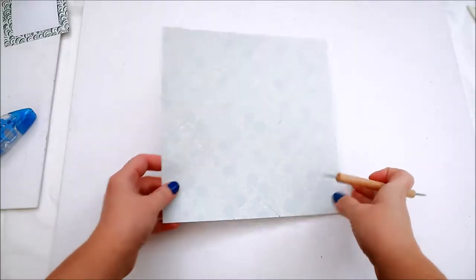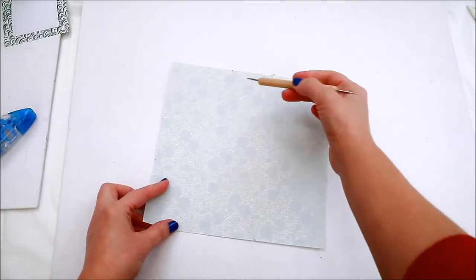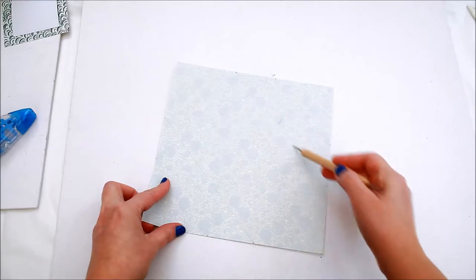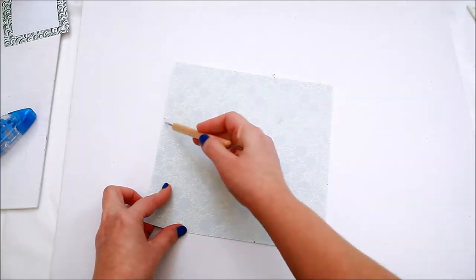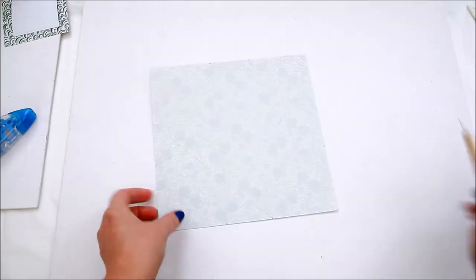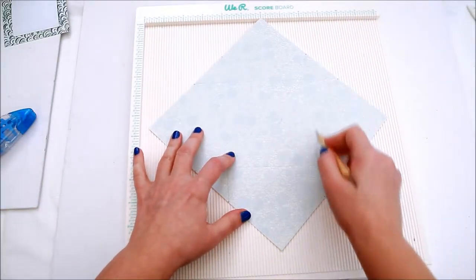For those who haven't seen the first video, I'm going to link it in the top corner. Start with your 8 by 8 inches double-sided paper, mark each side at 3 and 5 inches, then score on an angle, just like you do for an envelope.